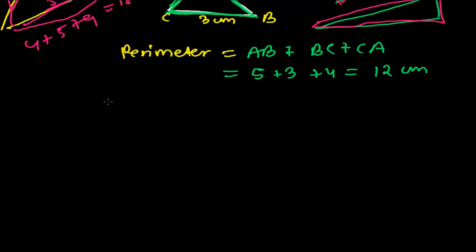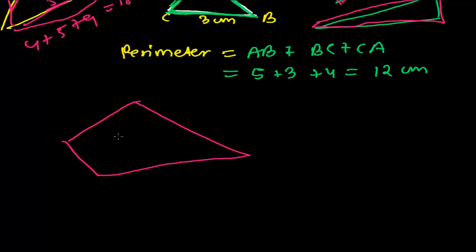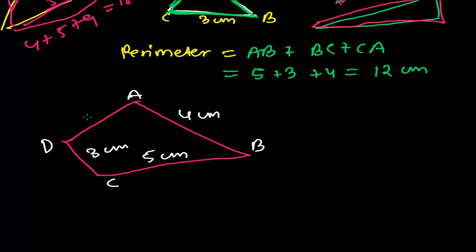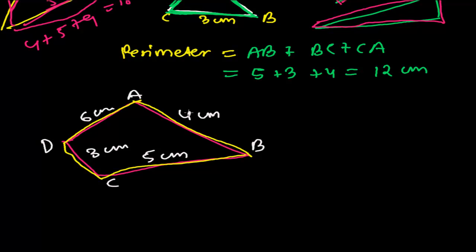Now let's talk about the quadrilateral. Suppose I have a quadrilateral with corners labeled A, B, C, and D. Suppose AB is 4 centimeters, BC is 5 centimeters, CD is 3 centimeters, and AD is 6 centimeters. So what is the perimeter of this quadrilateral? Again, it is the sum of these lengths: AB plus BC plus CD plus AD.